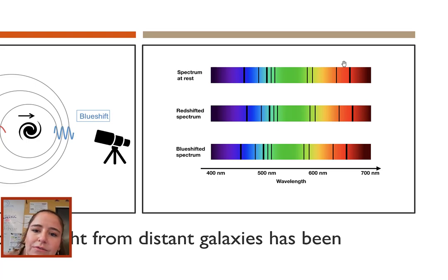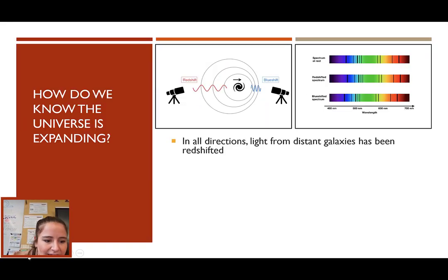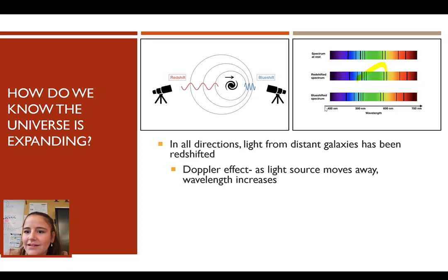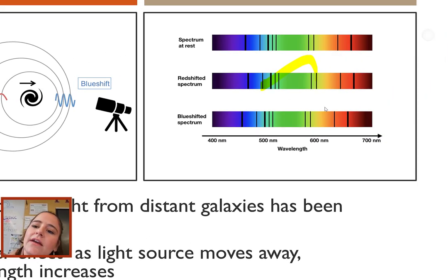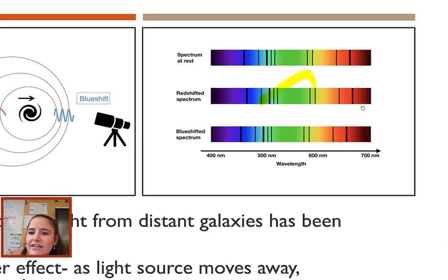If we're viewing the spectrum at rest, we know the characteristic lines that it will have. If we are looking at the spectra, what we see is that they're all shifted, shifted slightly to the right. That is red shifted.